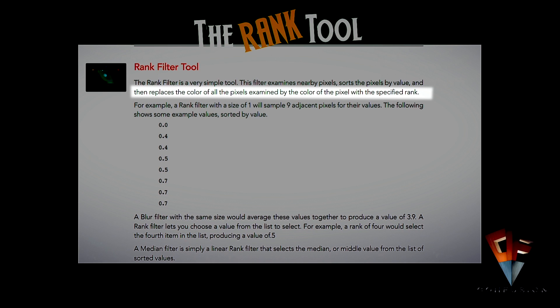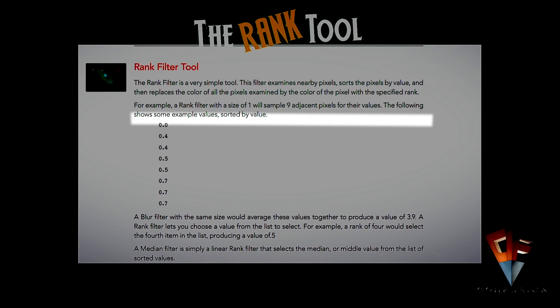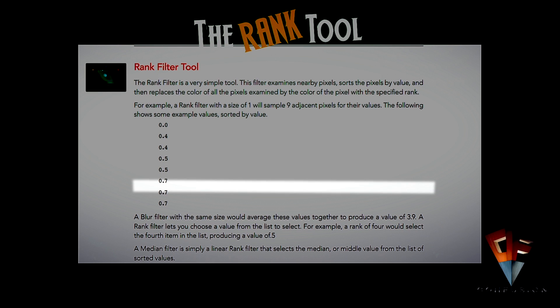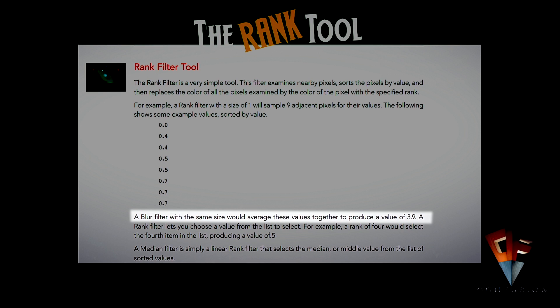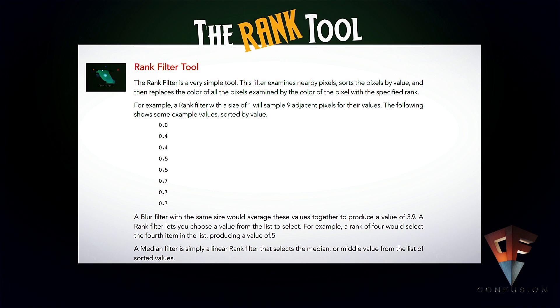Now, for people who are not so proficient with the English language, this might already be confusing — first of all because the word 'pixel' is used like four times. For example, a rank filter with a size of one will sample nine adjacent pixels by their values. You get this list here and you don't know what to do with it. Then it goes on: a blur filter with the same size would average these values to produce a value of 3.9. A rank filter lets you choose a value from the list — for example, a rank of 4 would select the fourth item in the list, producing a value of 0.5. Now this is already a little bit difficult to understand, and mentioning the blur filter will just give you the last punch and you're completely lost. So let's simplify this a little bit.